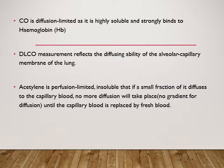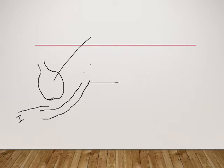Acetylene is perfusion limited and insoluble — if a small fraction of it diffuses to the capillary blood, no more diffusion will take place as there is no gradient for diffusion until the capillary blood is replaced by fresh blood. Carbon monoxide is diffusion limited, whereas carbon dioxide, nitrous oxide, and acetylene gases are perfusion limited.